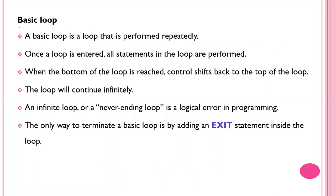The first one is the basic loop. As the name says, it is a loop that is performed repeatedly. Once the loop is entered, all the statements in the loop are performed. When the bottom of the loop is reached, control shifts back to the top of the loop, so the loop continues infinitely. An infinite loop is also called a never-ending loop, which is a logical error. One way to terminate a basic loop is to add an exit statement inside the loop.